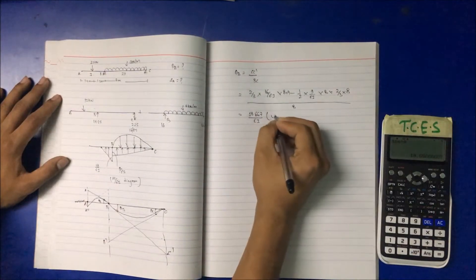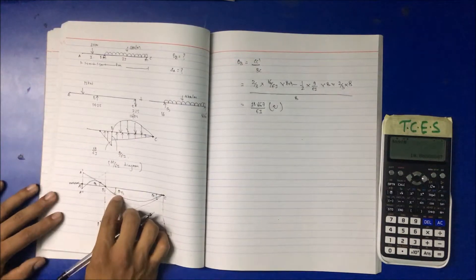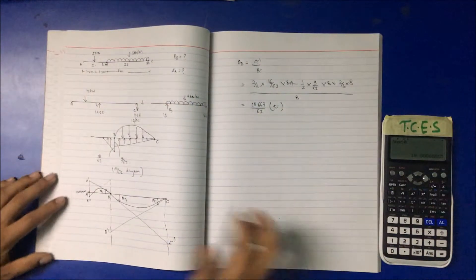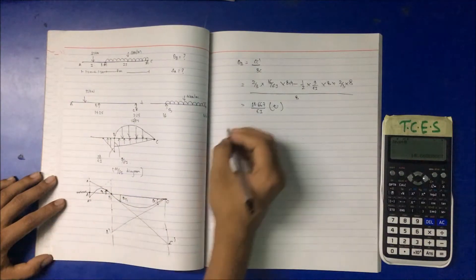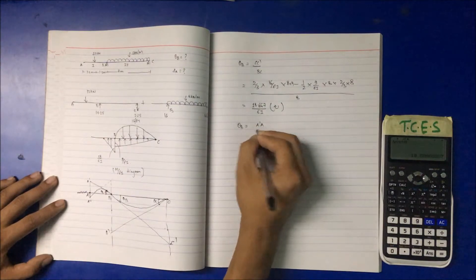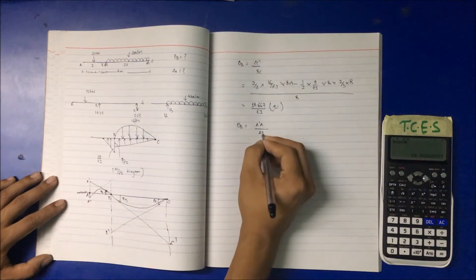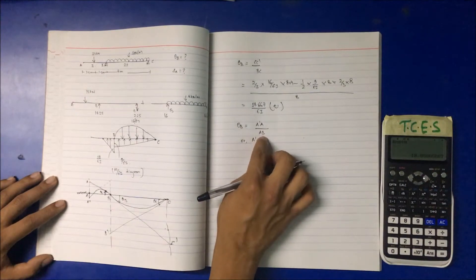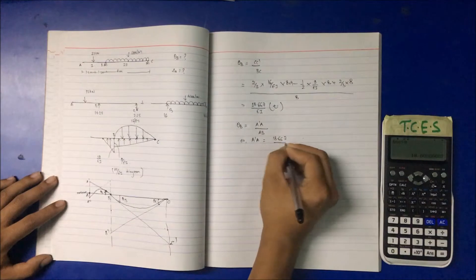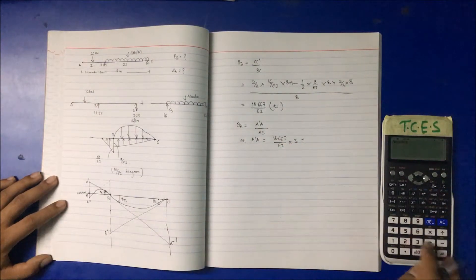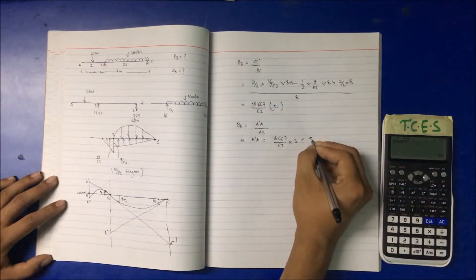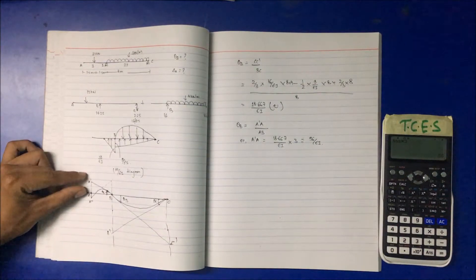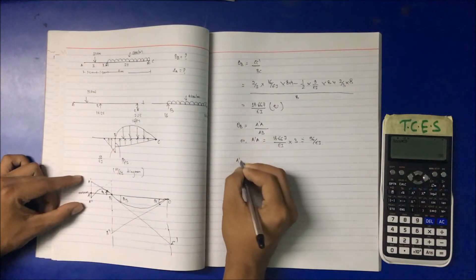The value 18.667 by EI is positive, confirming it is clockwise, which is correct. So theta B equals 18.667 by EI. To find deflection at point A, we use: A dash A equals theta B multiplied by span AB, which is 3 meters. So A dash A equals 18.667/EI × 3, which gives 56 by EI.